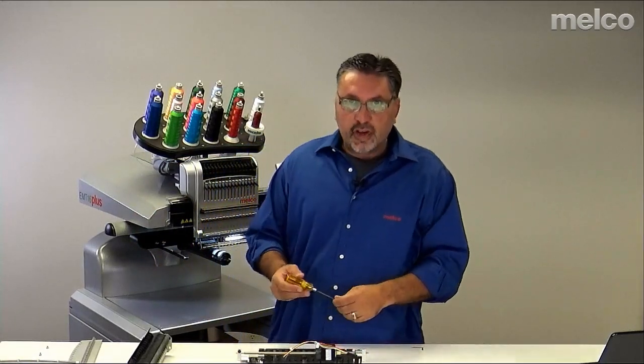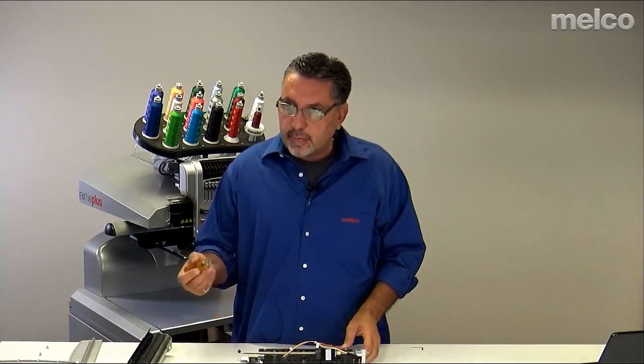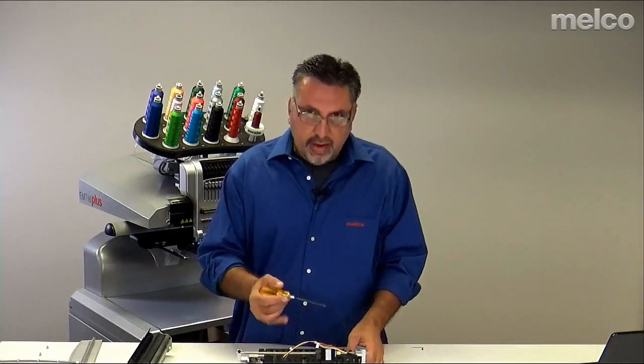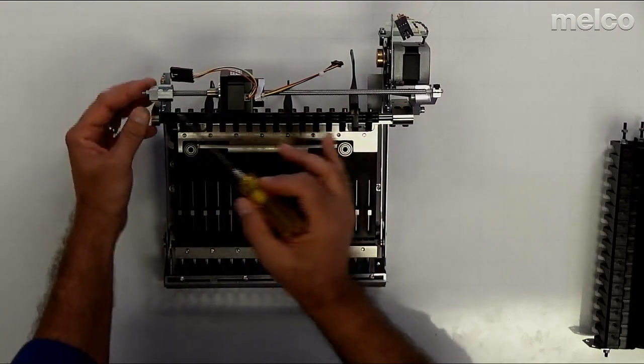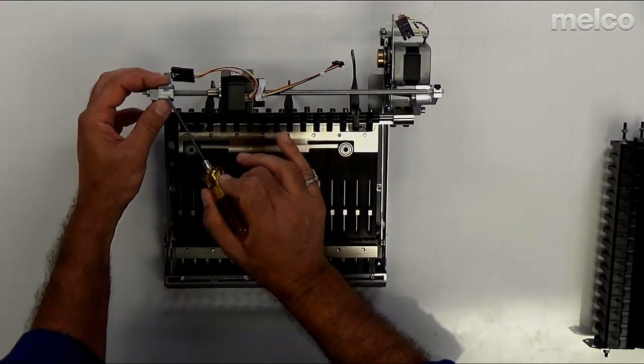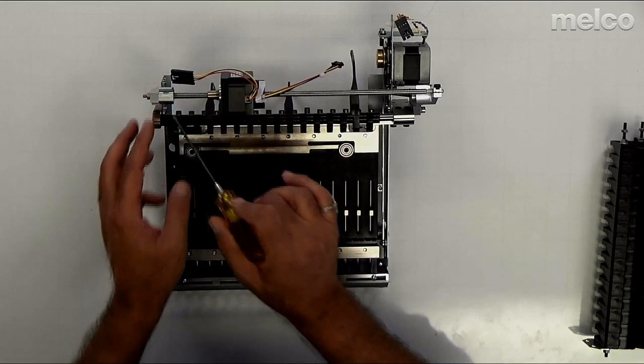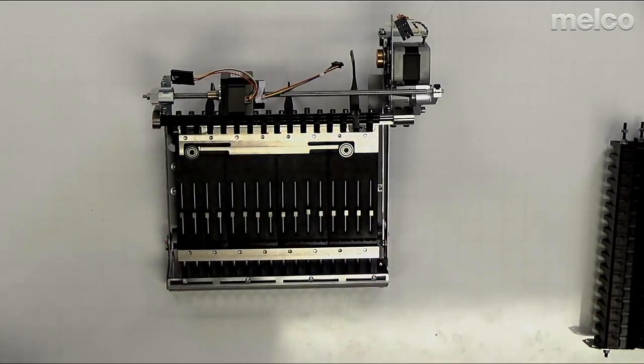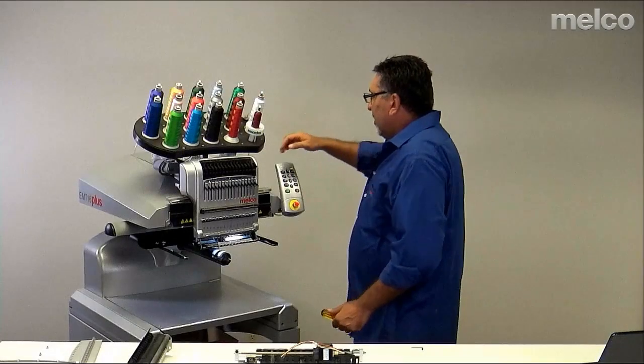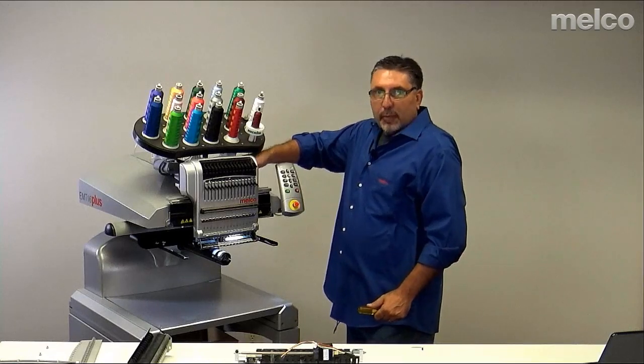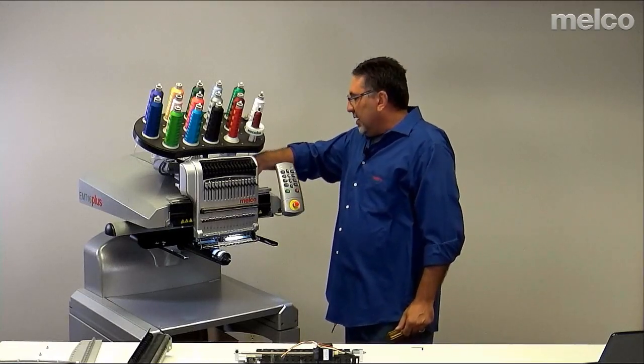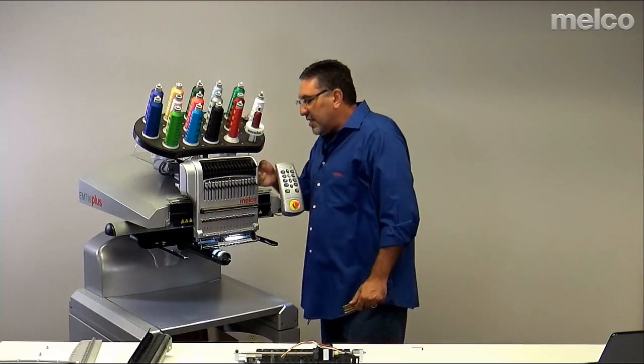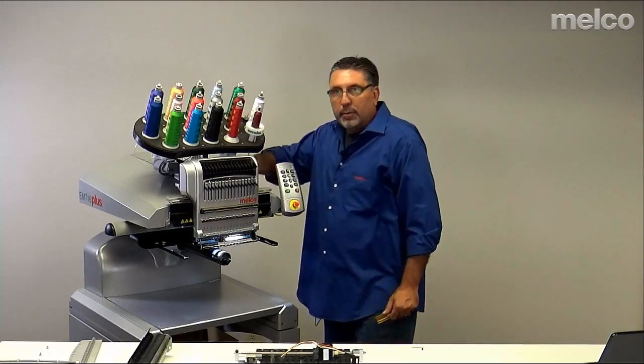One of the most common areas where the thread will bind is right here. This guy here is called the color change hard stop. Now, if we were to look at our embroidery machine, it is on the top right corner of the needle case. It's a little silver cup and it actually has a tag on it that says do not remove.